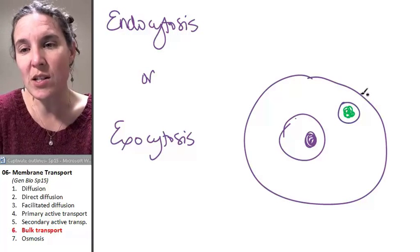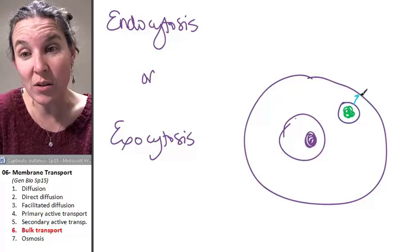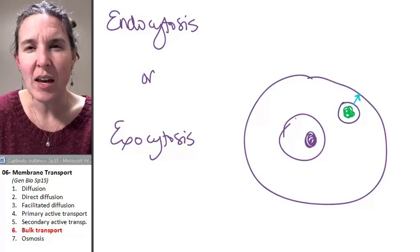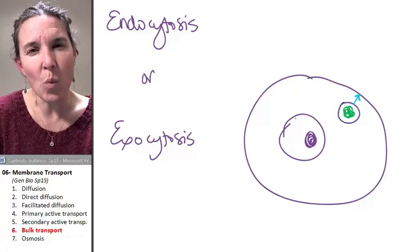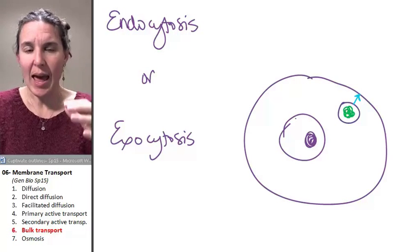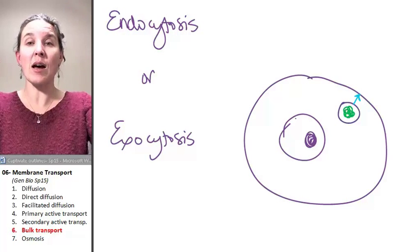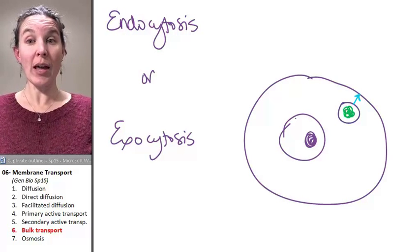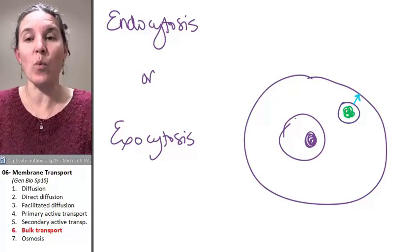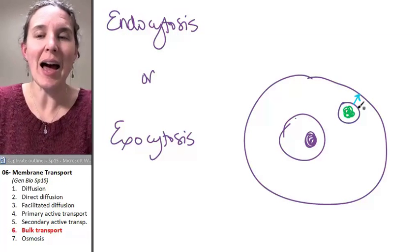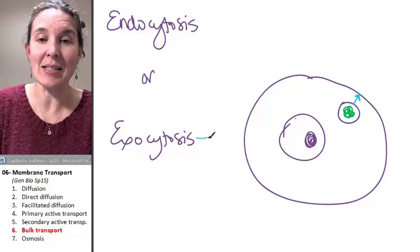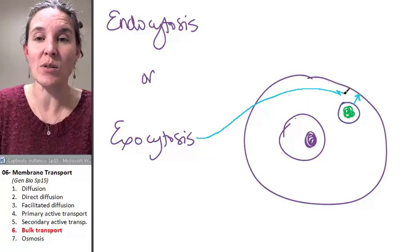Well, what we can do is we can actually fuse the vesicle with the cell membrane, and then literally fuse the vesicle and then open it up and unfold outward, and you're going to end up with what was inside outside. And that is the process of exocytosis.